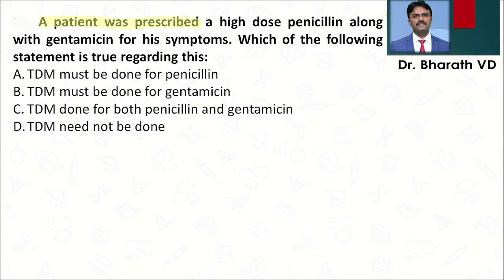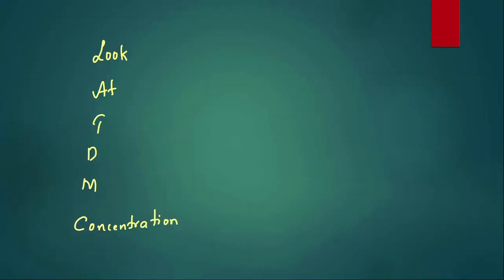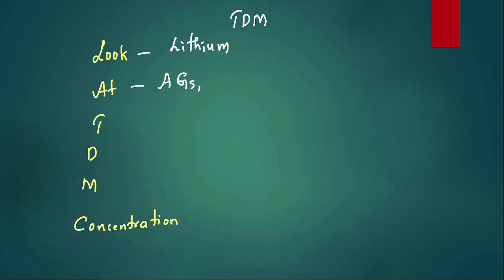Fifth question: a patient was prescribed high-dose penicillin along with gentamicin — which statement is true? TDM (therapeutic drug monitoring) must be done for penicillin — false, because penicillin has a wide therapeutic index. TDM must be done for gentamicin — true, because it is toxic and can cause ototoxicity, nephrotoxicity, and neuromuscular blockade. TDM must be done at least for aminoglycosides.